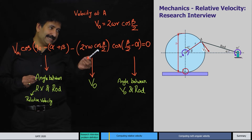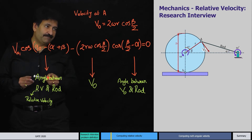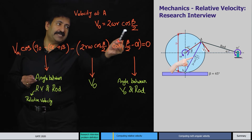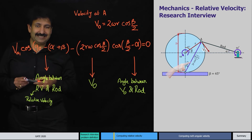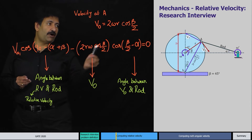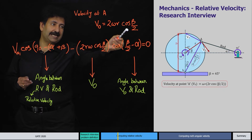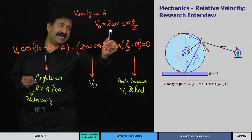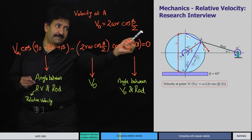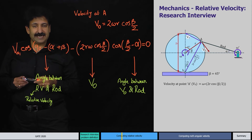The instantaneous center of the disc is characterized by zero velocity. From the geometry, point A is at a distance of 2r·cos(beta/2), as also shown in the figure. Therefore, since the instantaneous center of rotation has zero velocity, the velocity of point A due to rolling is v_0 = 2 omega r cos(beta/2), which can also be written as omega into 2r·cos(beta/2).